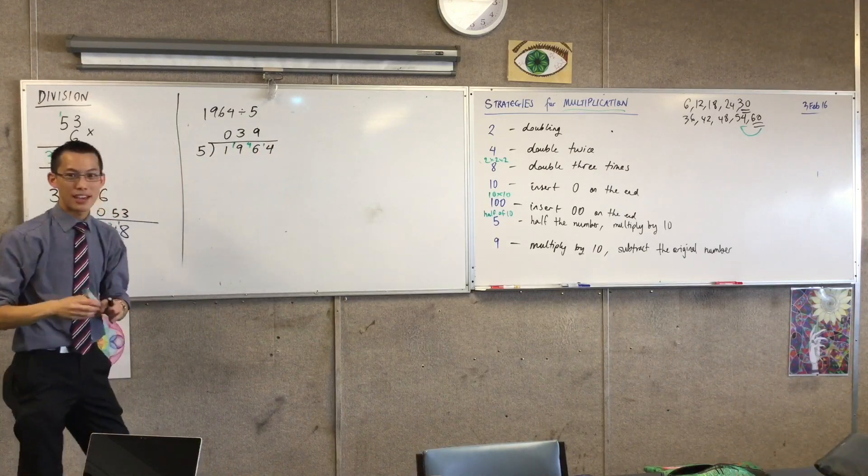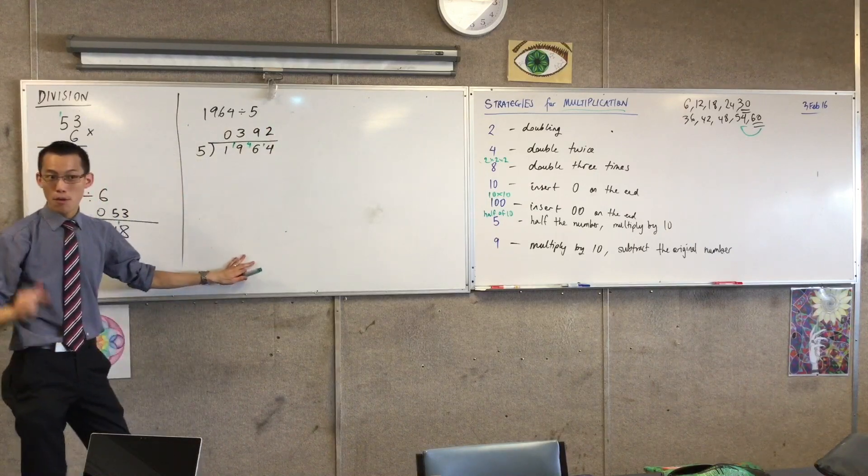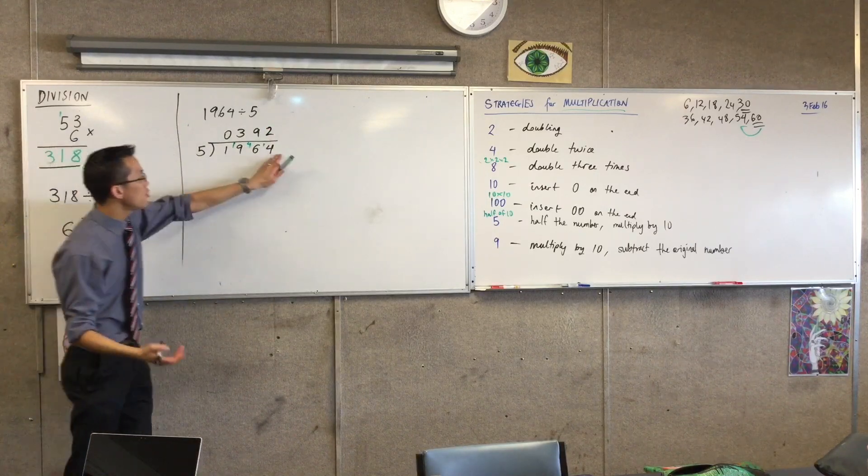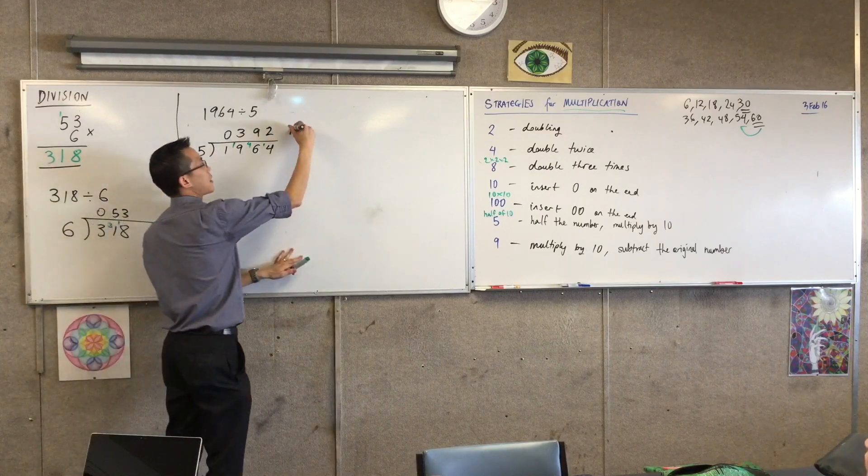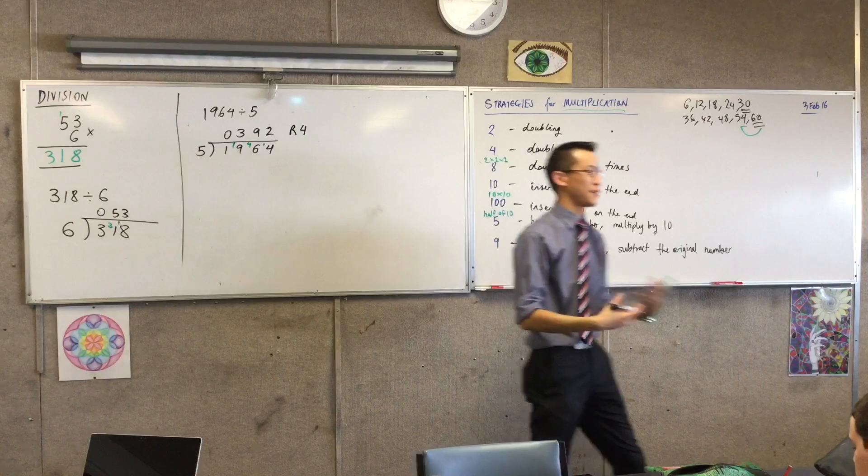And there's how much left over? There's 1 left over. And lastly, how many 5's in 14? 2. 2. And there is 4. Now there's 4 left over and I've got no more spots to put them in.